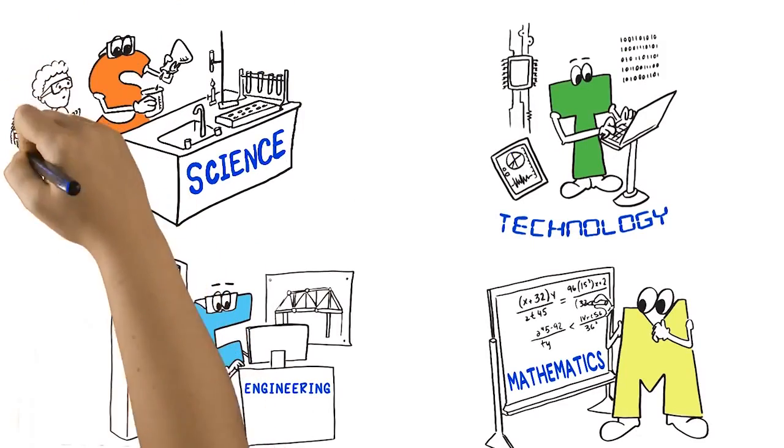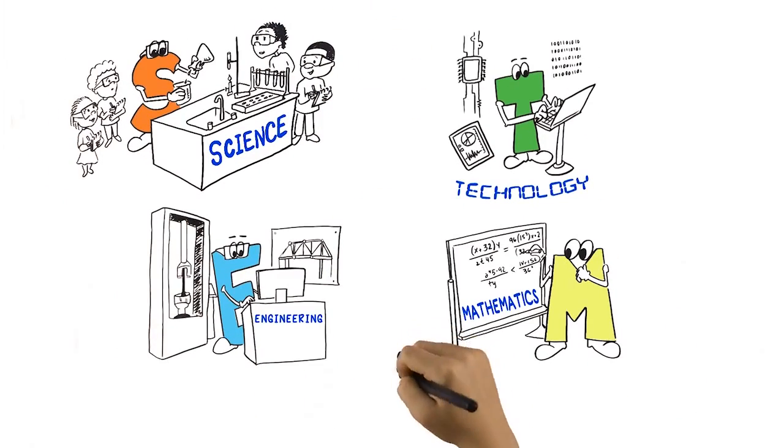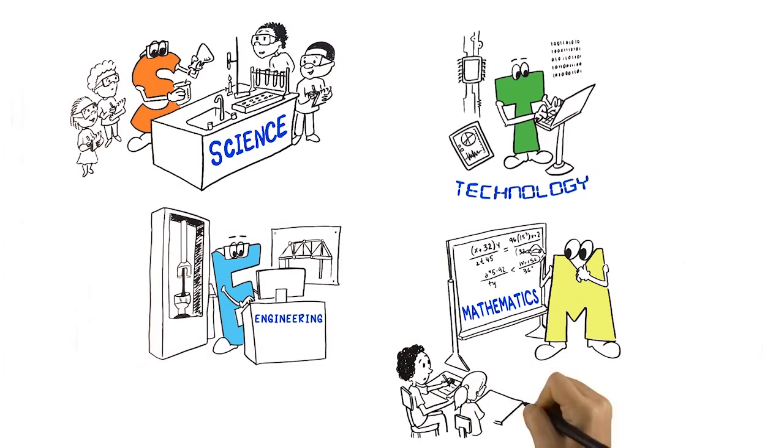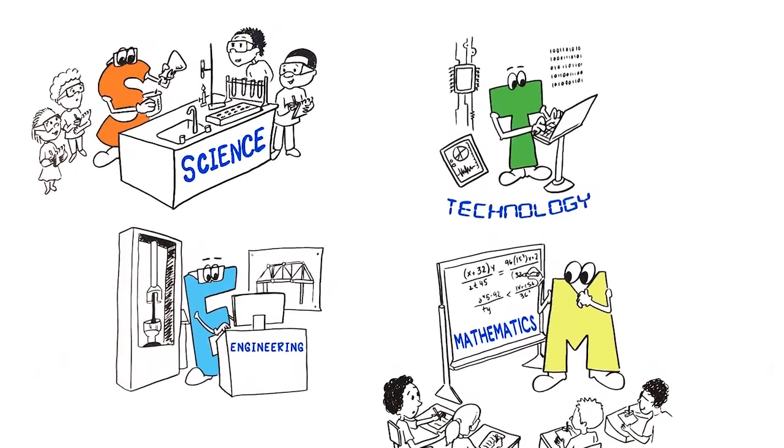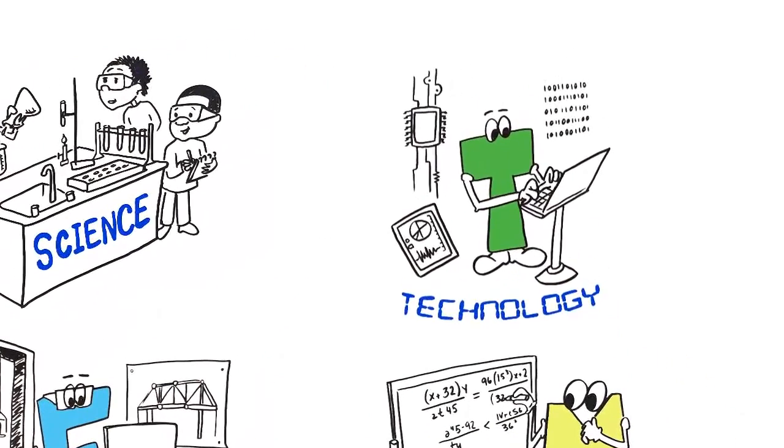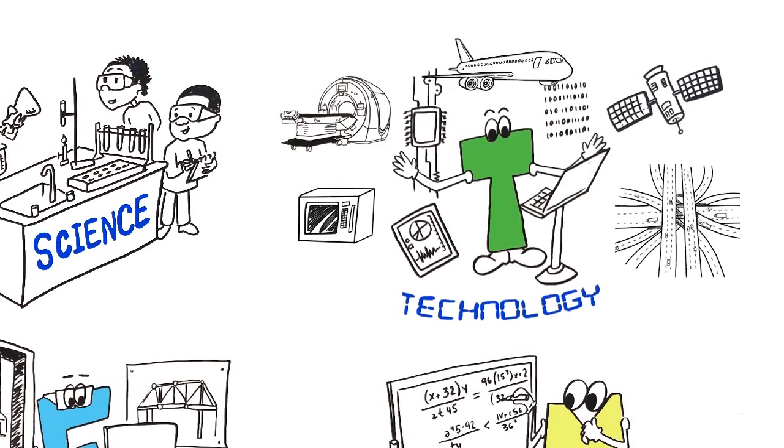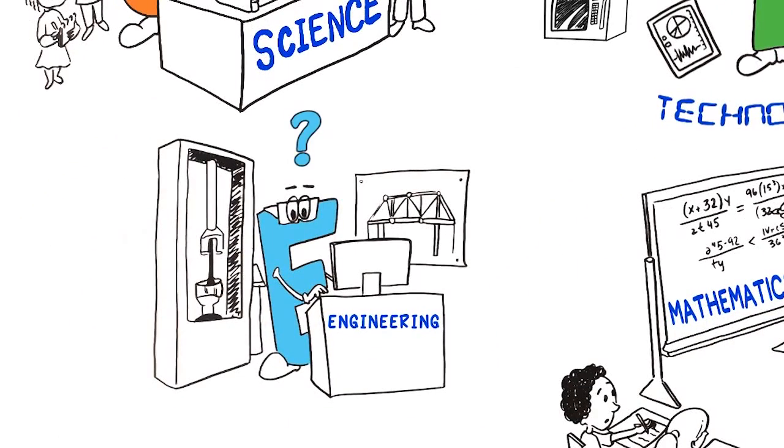In kindergarten through 12th grade in the United States, most STEM teaching and learning focuses on science or mathematics. Comparatively little attention has been paid to the T, the products and systems that meet human needs, and E, the creative process used to design these things.